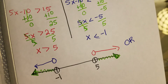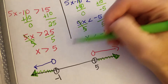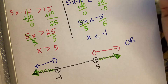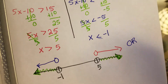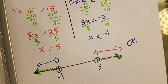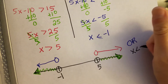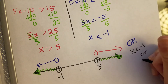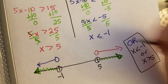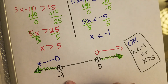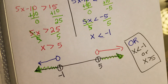For my final answer: X is less than negative 1, or X is greater than 5. That is the final answer, and that is what the number line looks like. And that's done!